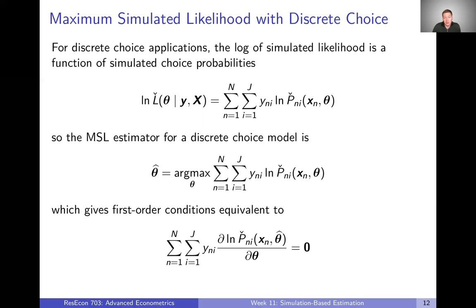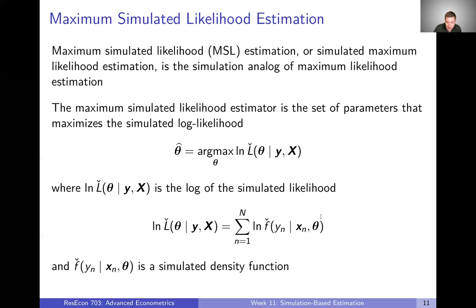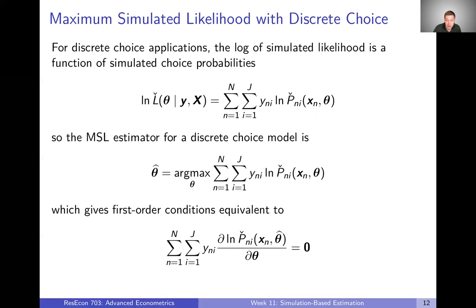With our discrete choice applications, the densities that we have to simulate are going to be those choice probabilities. For a discrete choice model like a mixed logit model, our simulated log likelihood function is an expression that depends on simulated choice probabilities. This looks exactly like what we had when we talked about maximum likelihood with a multinomial logit model — it's just that now we're plugging in simulated choice probabilities from the mixed logit model. The maximum simulated likelihood estimator for a discrete choice model is the set of parameters that maximizes this expression, which importantly depends on these simulated choice probabilities.